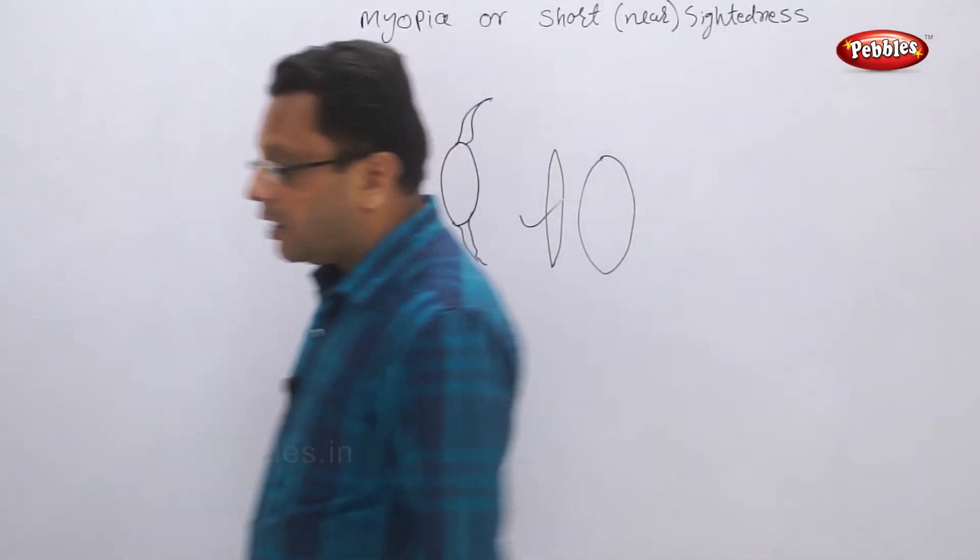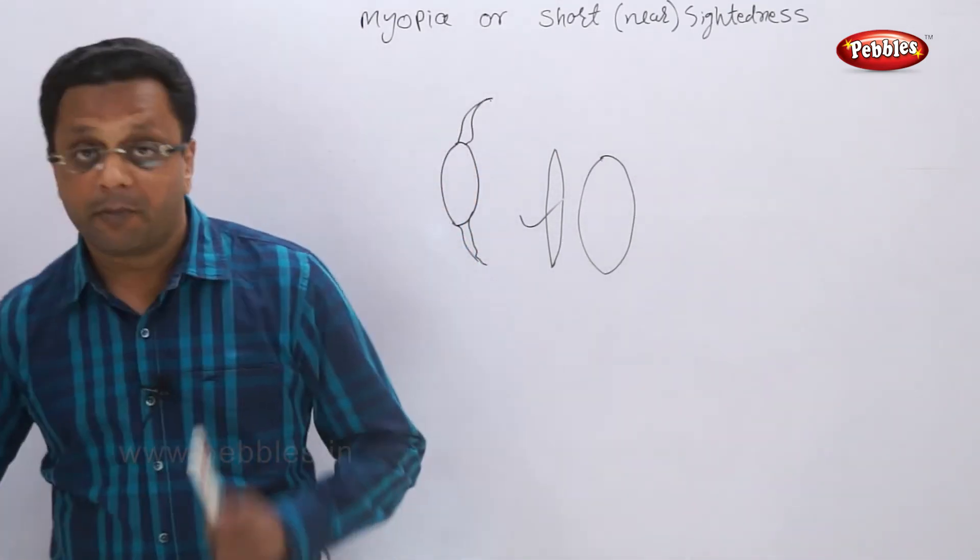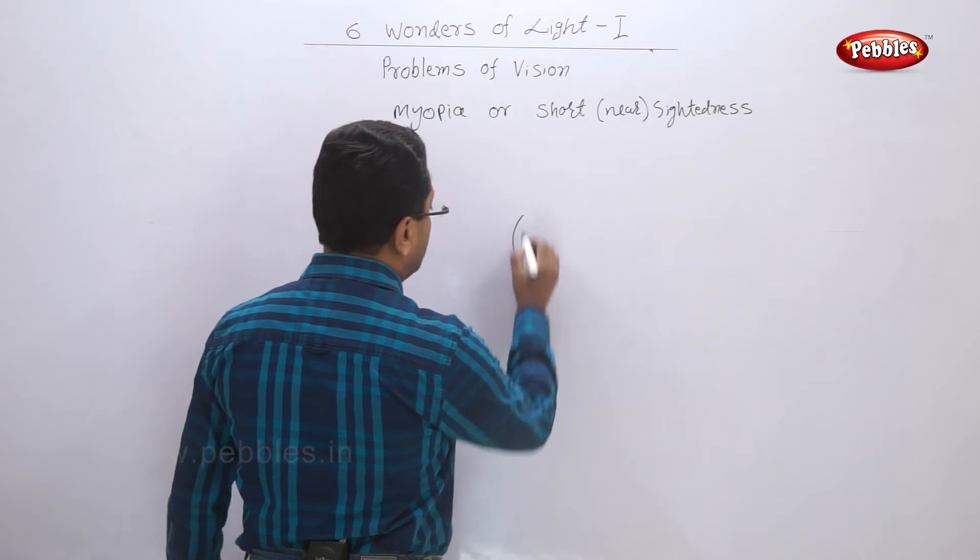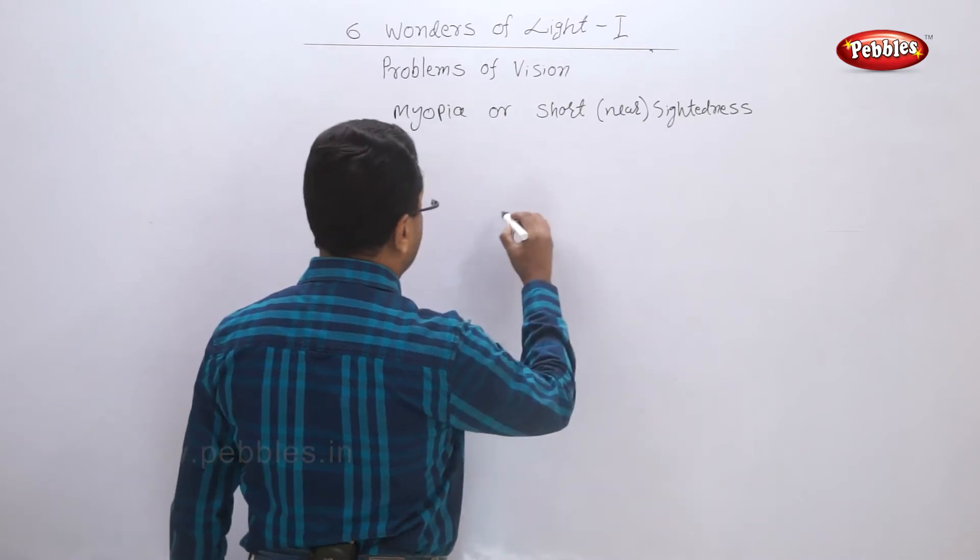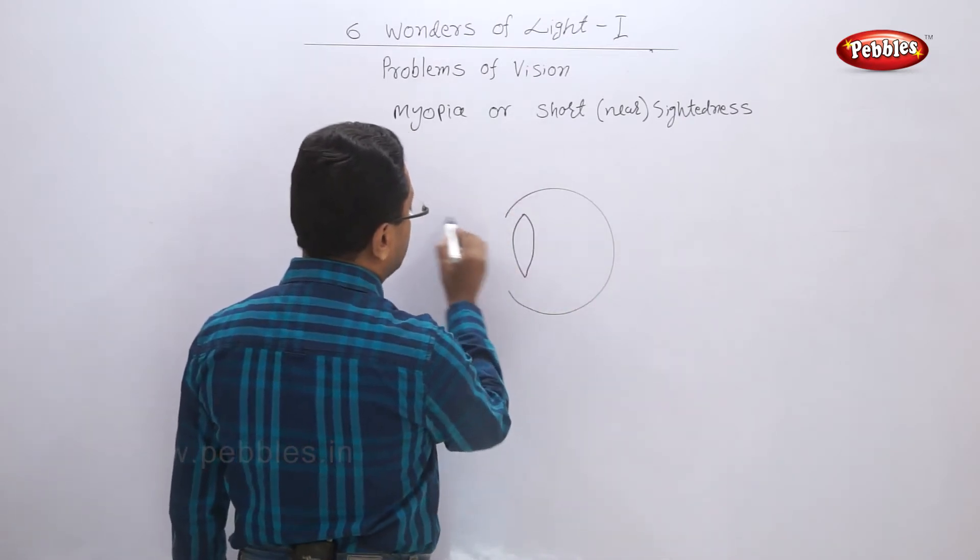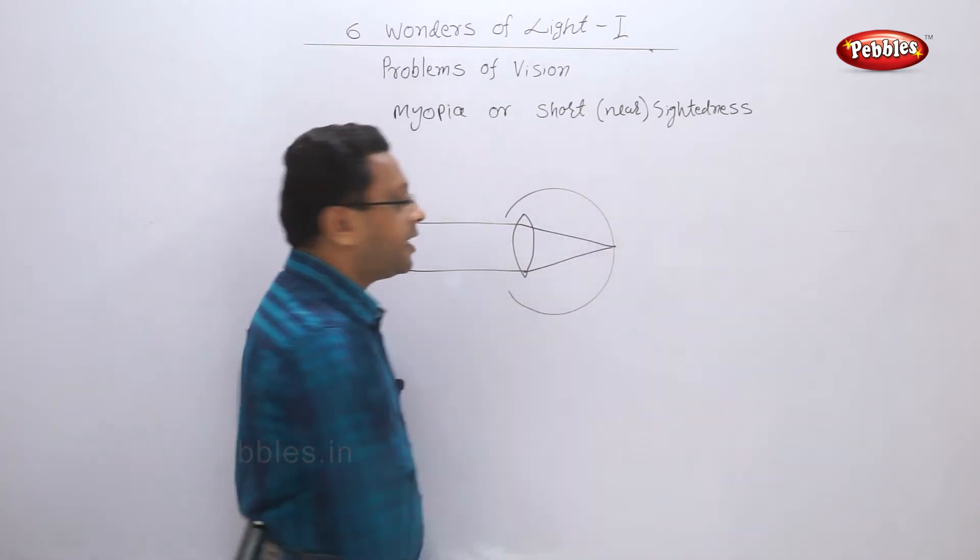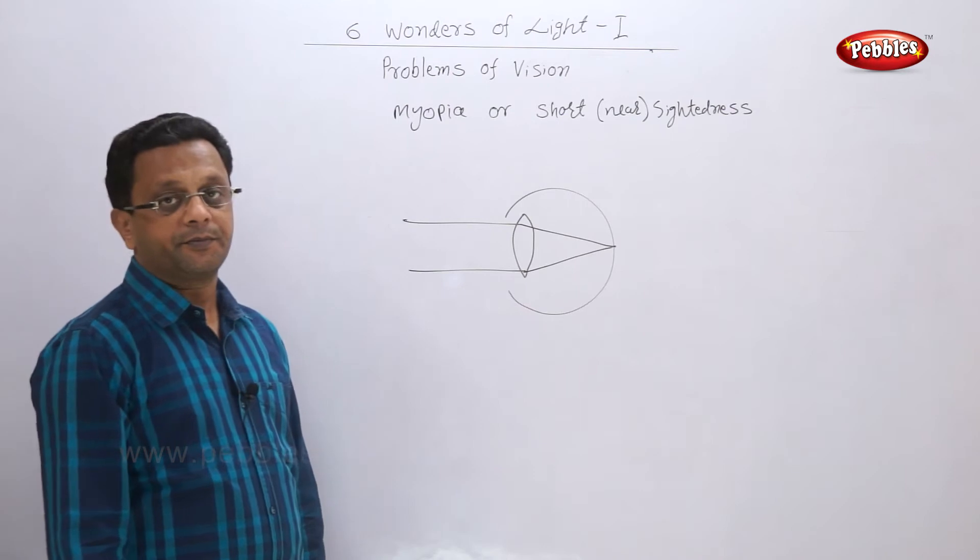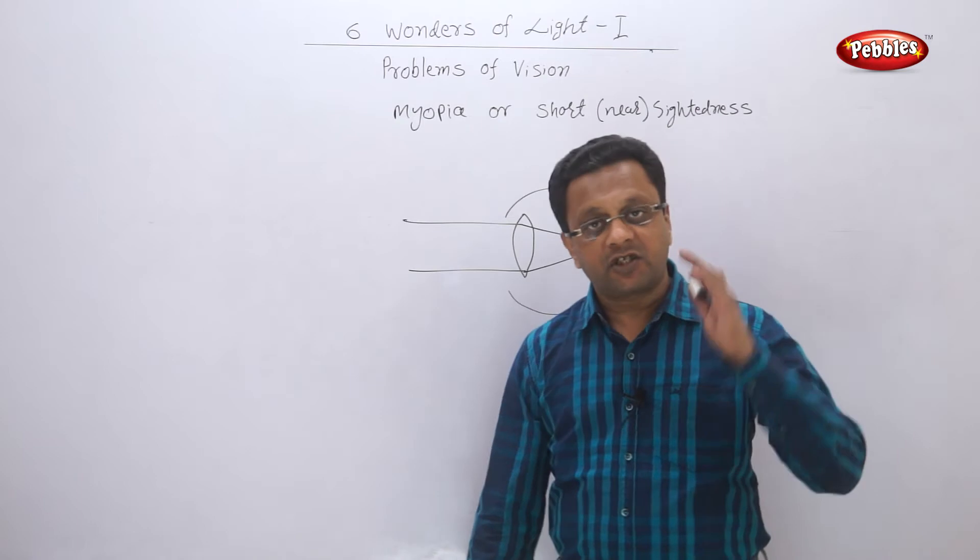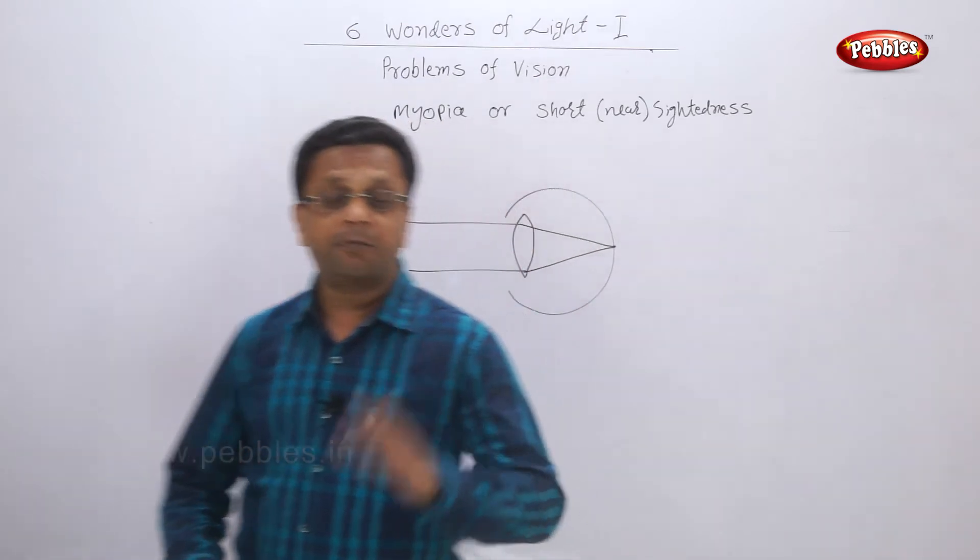The second thing, if the eyeball is elongated then also this problem may arise. What is the problem then? First of all we will see how you see an object. For example, if this is an eyeball, whenever the light rays come the image is exactly formed on retina. The focal length of the lens is adjusted in such a way that the image is exactly on the retina. Only then you will get a sharp image.